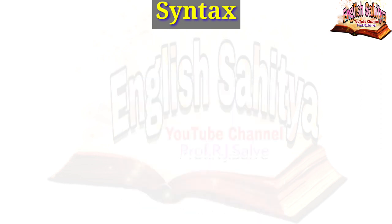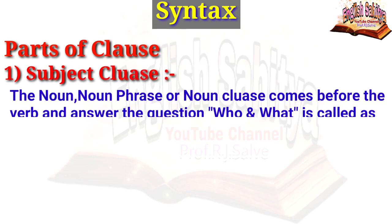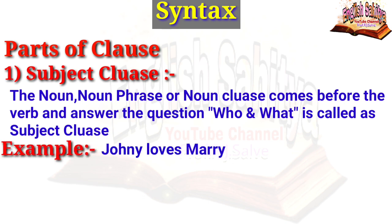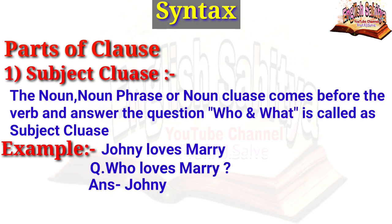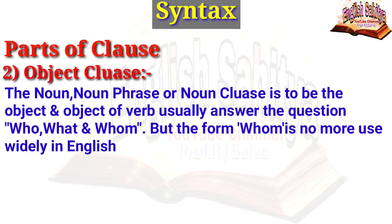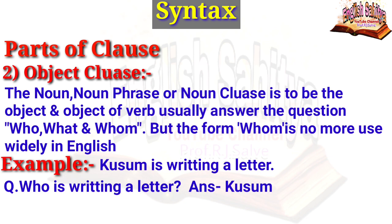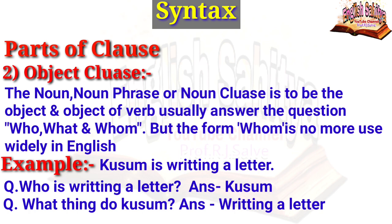According to subject and object, there are two parts of a clause: subject clause and object clause. In the subject clause, the noun, noun phrase, or noun clause comes before the verb and answers the question 'who' or 'what' — it is called the subject clause. For example, 'Johnny loves Mary' — the question is 'who loves Mary?' and the answer is 'Johnny,' so this is a subject clause. In the object clause, the noun, noun phrase, or noun clause is the object of the verb, usually answering the question 'who,' 'what,' or 'whom.' For example, 'Kusum is writing a letter' — 'what is Kusum writing?' — answer: 'a letter.'